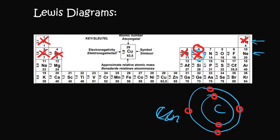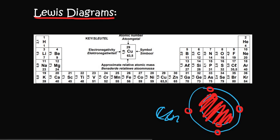When we are looking at Lewis diagrams specifically, we are not interested in the inner shells — we are only interested in the outermost one. What's really nice is that if you just count the group number — group one, two, three, four — we can see that carbon has four electrons on the outside.